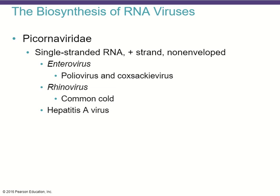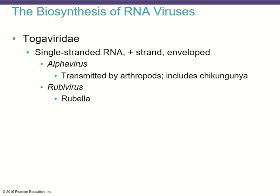RNA viruses have a genetic code of ribonucleic acid. Picornaviridae have a single strand of plus-sense RNA — the messenger RNA that can be directly translated into protein material. They are non-enveloped; examples include enterovirus, which includes poliovirus and coxsackievirus, rhinovirus which causes the common cold, and hepatitis A virus. Togaviridae include a single-stranded plus-sense RNA that is enveloped. One involves the alphavirus, which can be transmitted by arthropods and includes chikungunya, and there are rubiviruses which cause rubella.